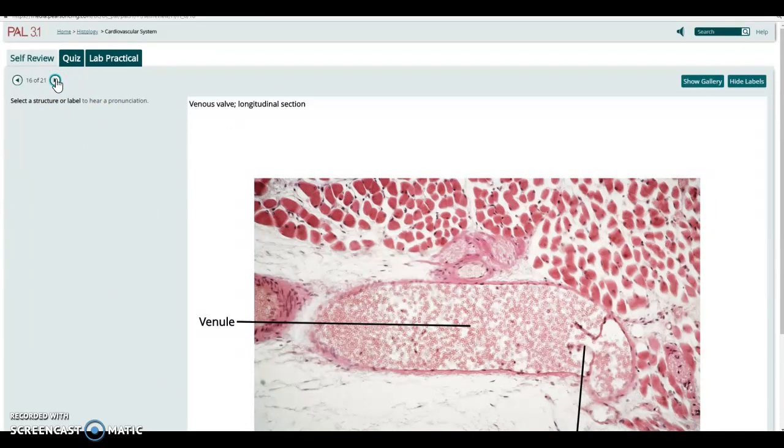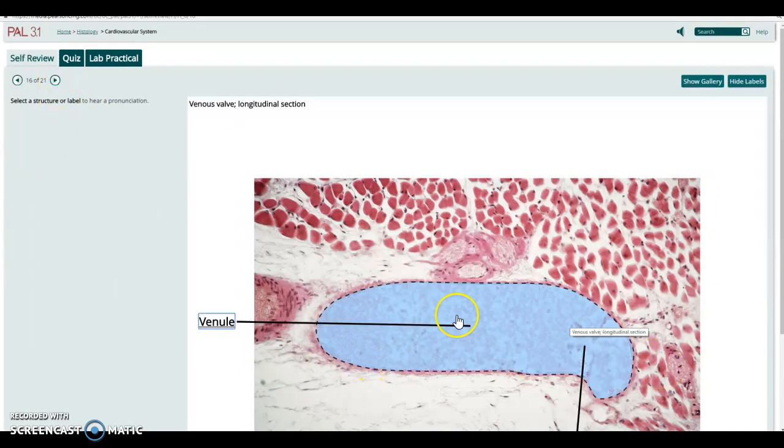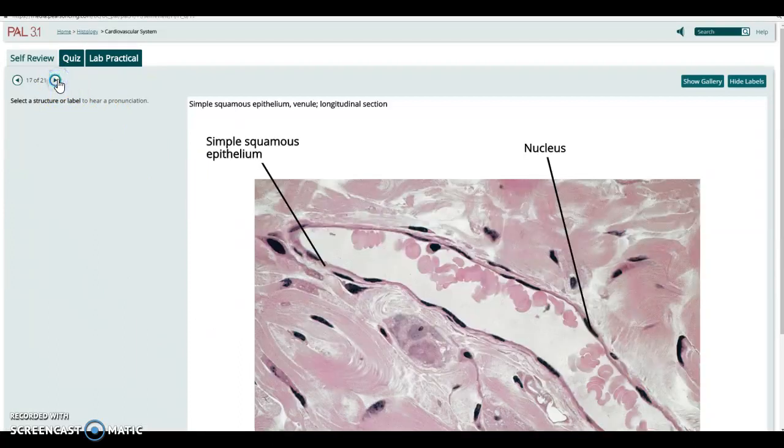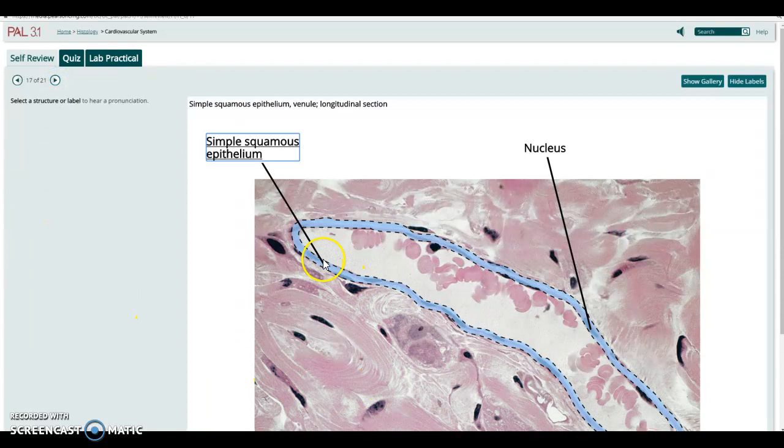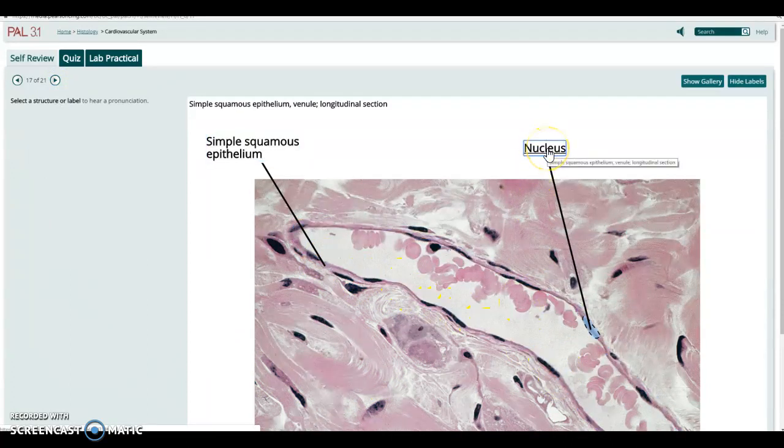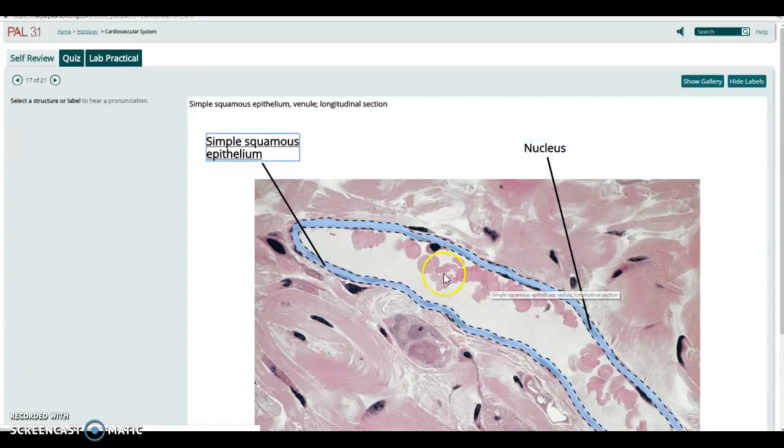This is a venule showing a lot of red blood cells and very thin outer layer, not much to the outer layer in the small vein. And this is an even smaller venule, you can see the nice simple squamous epithelial cells lining outside of this, the nuclei of those cells there and of course, the red blood cells running through the venule.